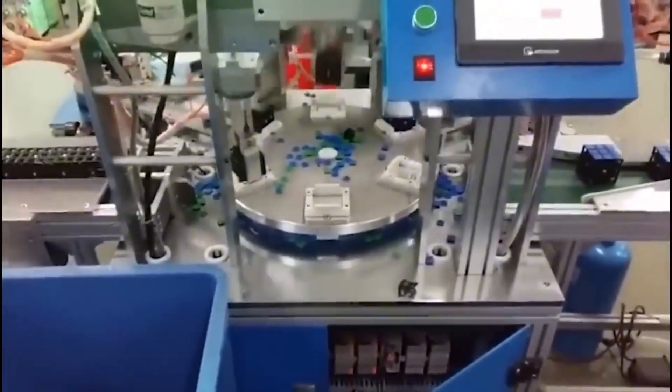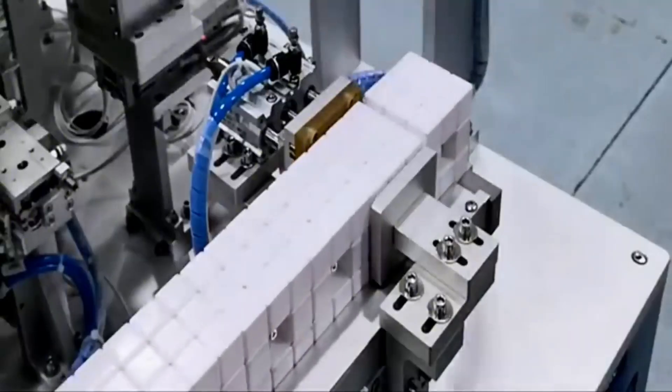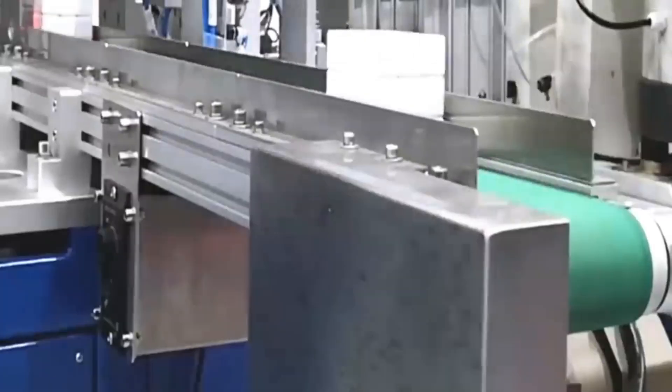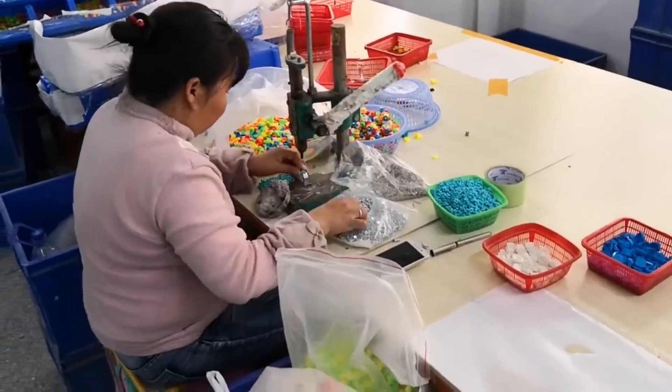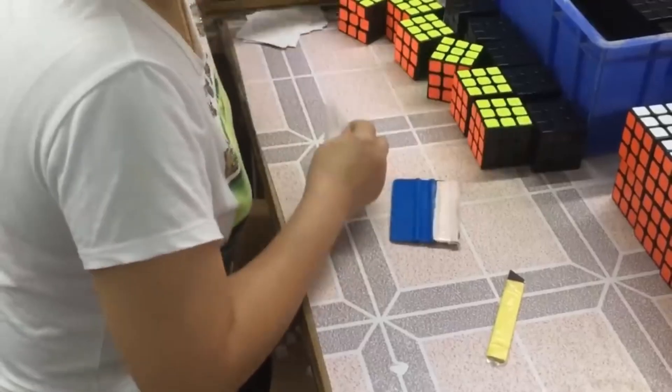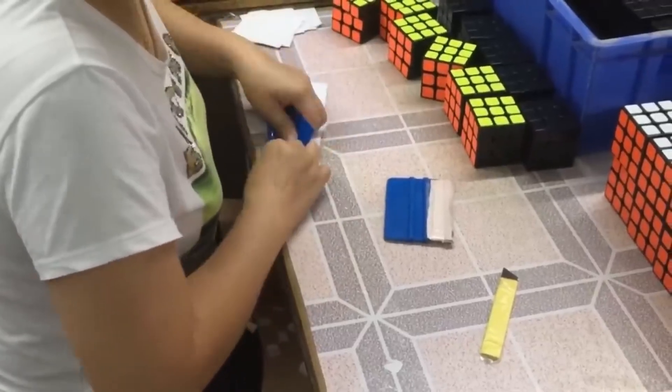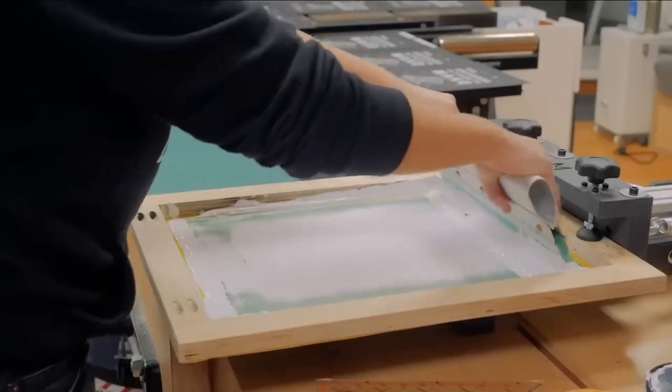Once the Rubik's cube assembly is complete, the process of labeling the faces with the corresponding colors begins. This crucial step is carried out with precision, using advanced techniques such as heat transfer printing or screen printing. These technologies ensure that each cube has vibrant and durable colors, essential for an optimal and long-lasting gaming experience.